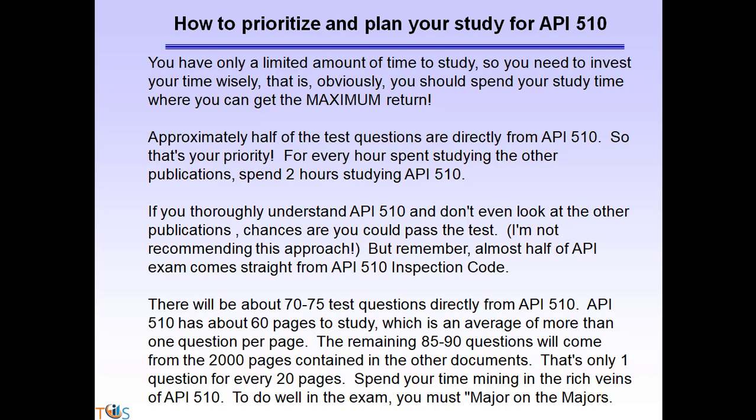Some people say that if you understand API 510 and don't look at the other publications, chances are you could pass. We are not recommending this approach, but the emphasis is that you should read the API 510 inspection code thoroughly. There would be 70 to 75 questions from the API 510 inspection code, which is 60 pages long — that's more than one question per page. The remaining 85 to 90 questions come from the rest of the reference documents, which is 2,000 pages long, roughly one question per 20 pages.